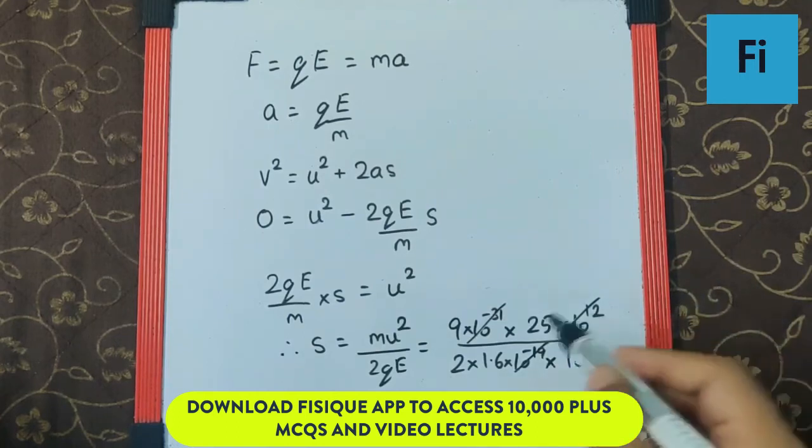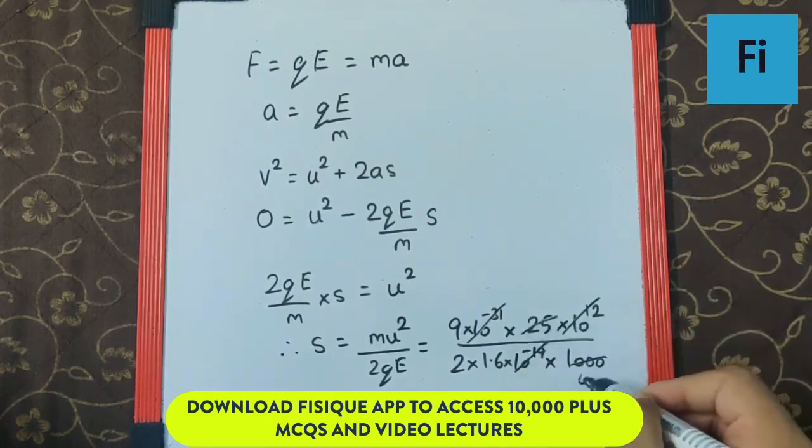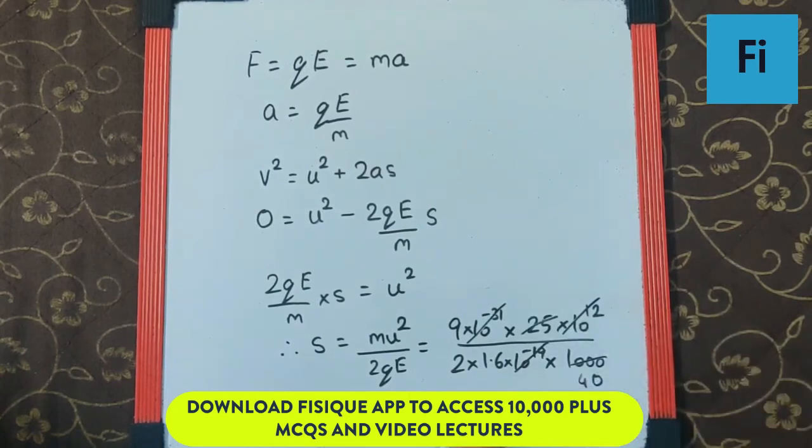Why am I doing this? Because 25 times 40 is 1000. So the distance is 9 upon—if I say 1.6 into 2 is 3.2, 3.2 doubled is 6.4, 6.4 doubled is 12.8, 12.8 into 10 is 128.